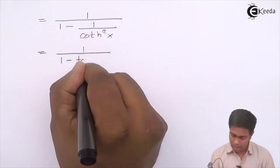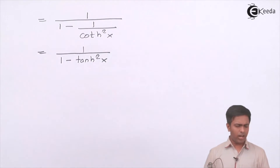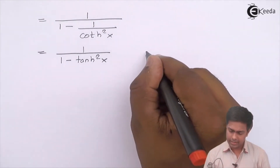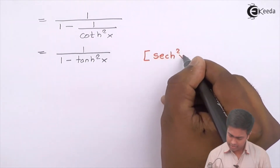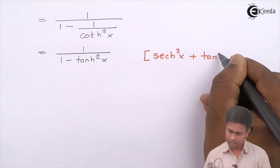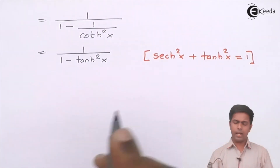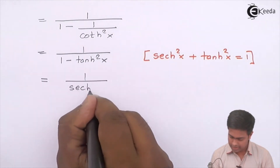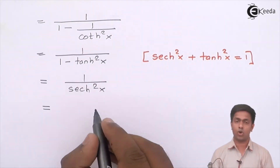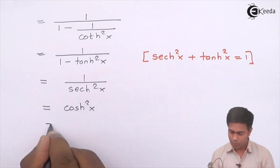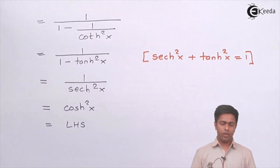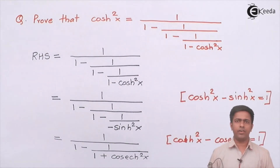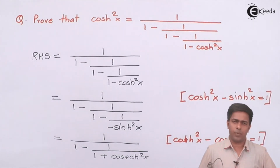Now, what is 1 minus hyperbolic tan square x? The formula here is: hyperbolic sec square x minus hyperbolic tan square x equals 1, so 1 minus hyperbolic tan square x equals hyperbolic sec square x. That gives us 1 upon hyperbolic sec square x. And since 1 upon sec is cos, this is nothing but hyperbolic cos square x — which is our left-hand side. We have proved that the right-hand side equals the left-hand side using the identities of hyperbolic functions. Thank you very much.